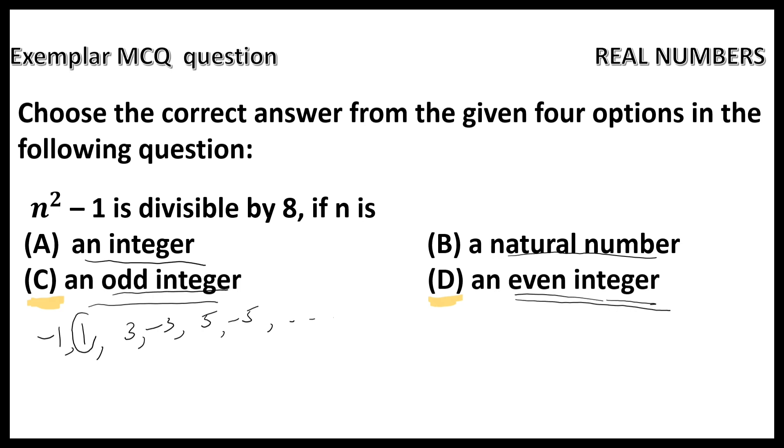Now let us take the example 1. 1 square is 1, minus 1 that is 0 which is divisible by 8. Now let us take the example odd number 3. 3 square is 9, 9 minus 1 that is 8 which is divisible by 8.